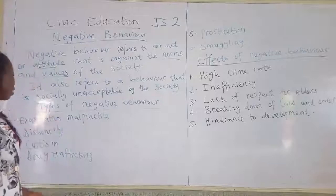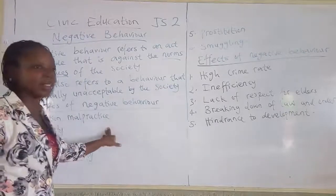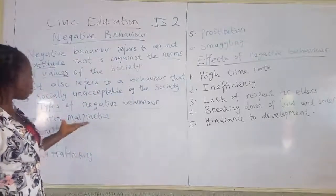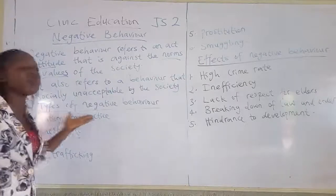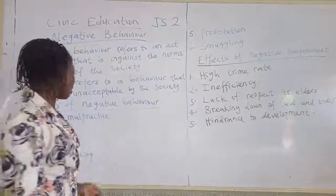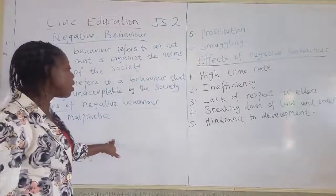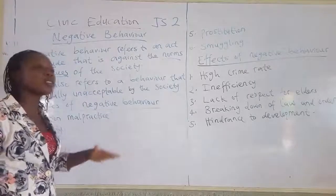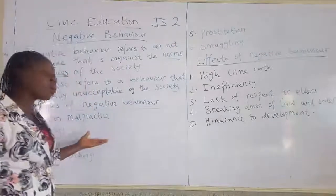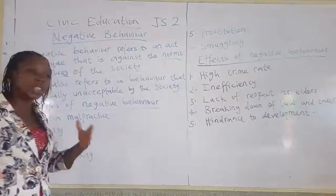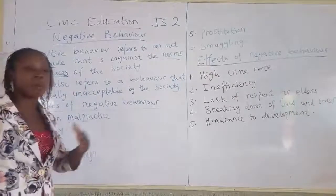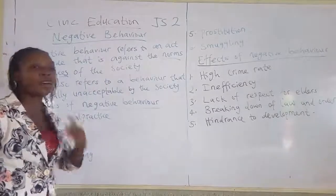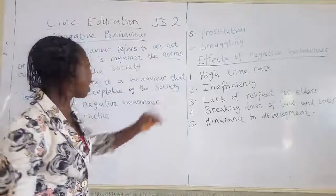We have some examples here. Number one, we have examination malpractice. There is no standard school that allows their students to engage in examination malpractice. There may be factors that lead to it — either you don't know the topic, or you are not familiar with the topic. This examination malpractice can come in any form: before the exam, during the exam, and after the examination.